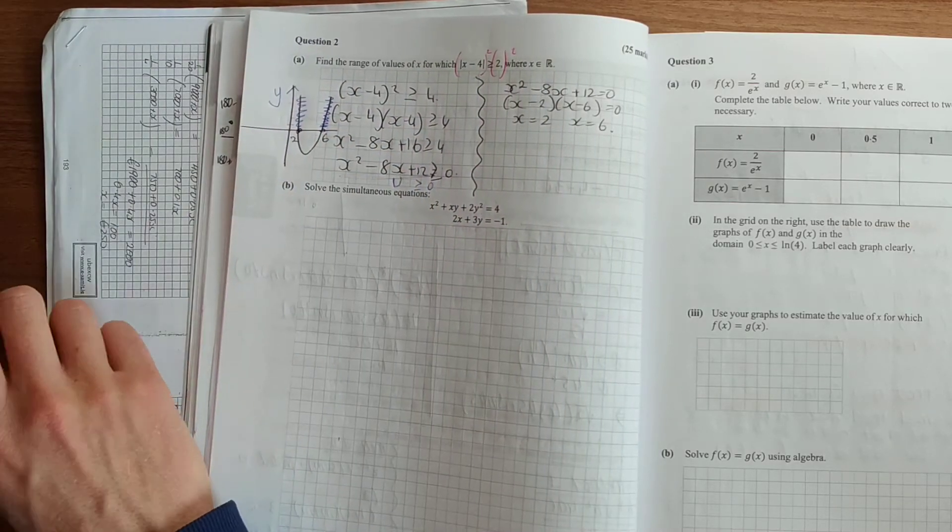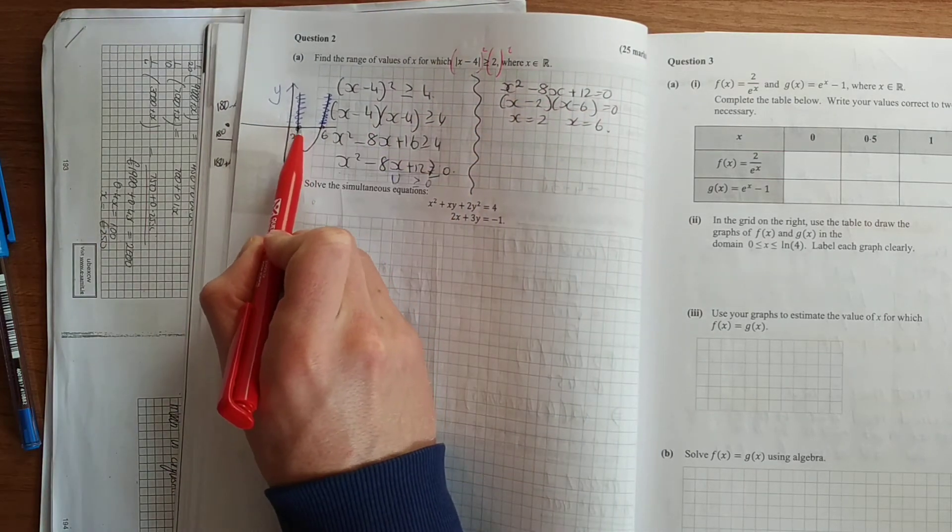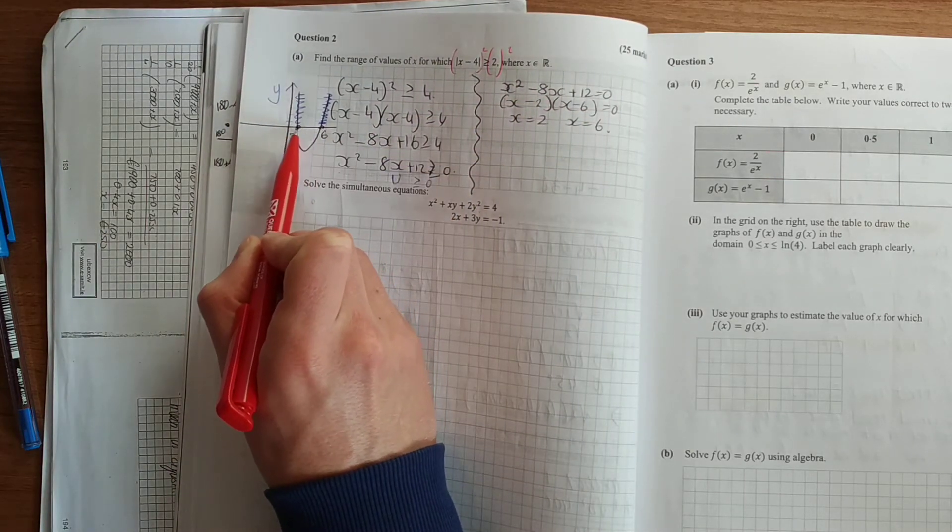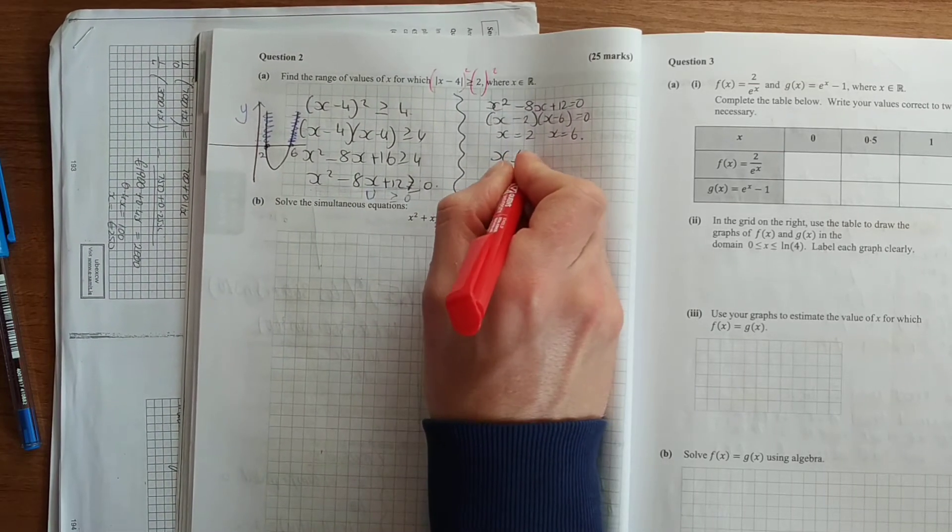So you must have your diagram, you must have your sketch for these questions. So what's happening to our values in relation to 2? Is it getting bigger or smaller? They're getting smaller.